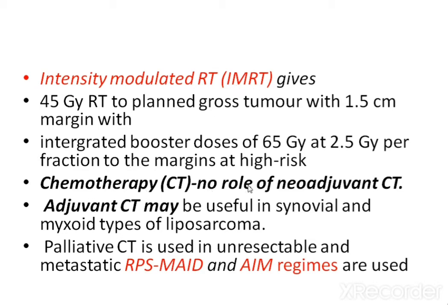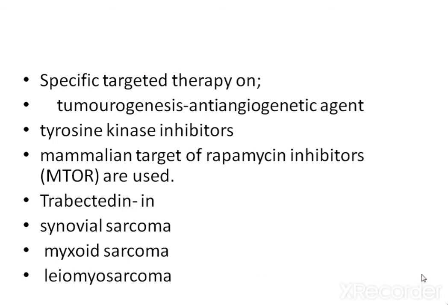Chemotherapy has no role as neoadjuvant treatment. Adjuvant chemotherapy may be useful in synovial and myxoid types of liposarcoma. Palliative chemotherapy is used in unresectable and metastatic retroperitoneal sarcoma; MAID and AIM regimens are used. Specific targeted therapies include anti-angiogenic agents, tyrosine kinase inhibitors, and mTOR (mammalian target of rapamycin) inhibitors. Trabectedin is used in synovial sarcoma, myxoid sarcoma, and leiomyosarcoma.